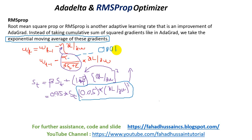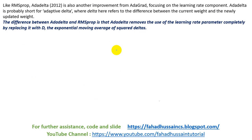AdaDelta and RMSProp are almost the same, but there are a few changes. AdaDelta, published in 2012, is also another improvement from AdaGrad, focusing on the learning rate component. AdaDelta is short for adaptive delta, where delta refers to the difference between the current weight and the newly updated weight. The key difference is that AdaDelta removes the use of the learning rate parameter completely, replacing it with DT.